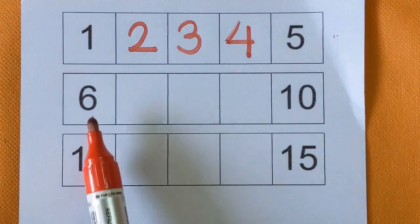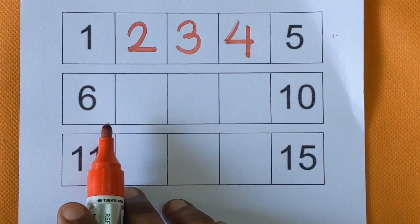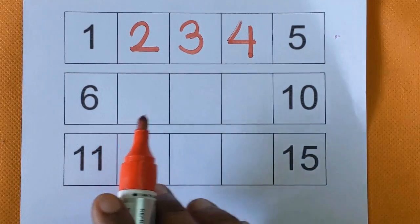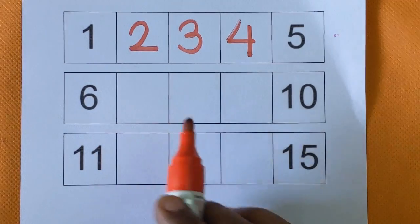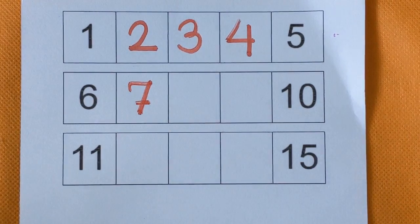After number 5, next is number 6. Then, after number 6, which number is missing here? It's a number 7.